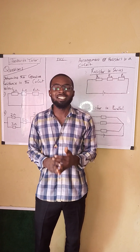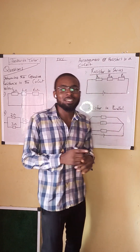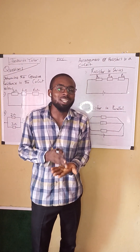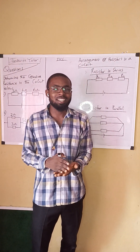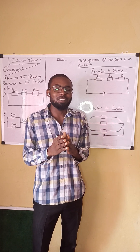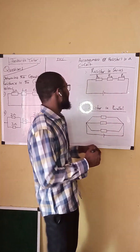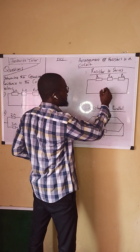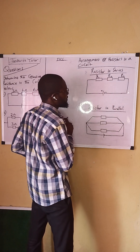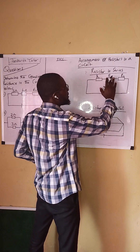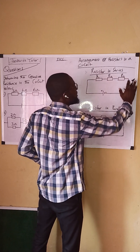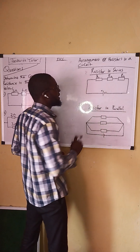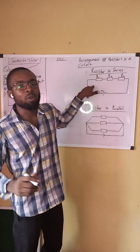Resistors in series: resistors are said to be in series if they are connected end to end — that is, from the positive terminal of the cell to the negative terminal. Here in this circuit, we have resistors one, two, and three, all connected in series from the positive terminal to the negative terminal.